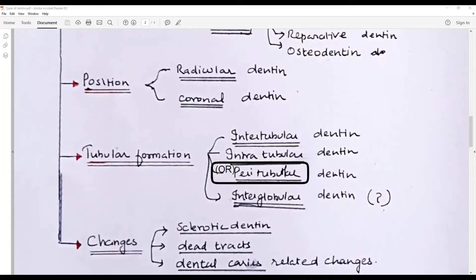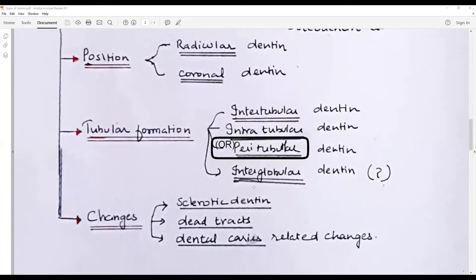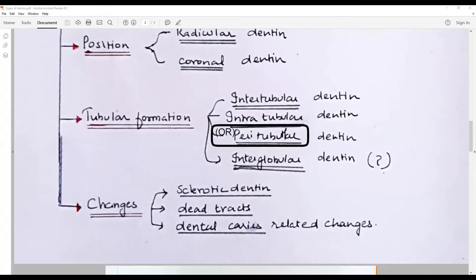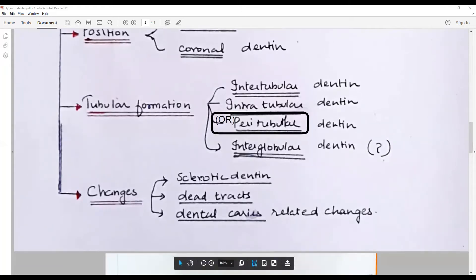Interglobular dentin depending upon the calcification process, the area that is relatively uncalcified. Depending on the changes seen, it could be as sclerotic dentin, dead tracks, transparent dentin, dental caries related changes. All these are later changes and these are the types of dentin that you have to discuss.